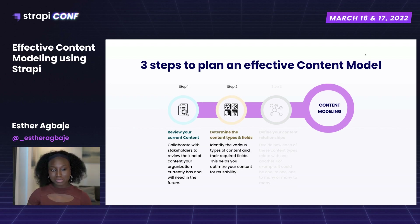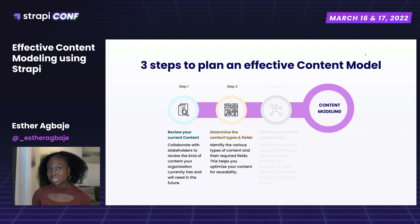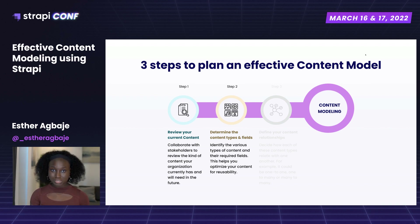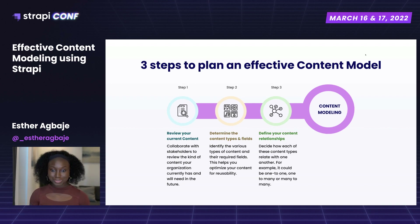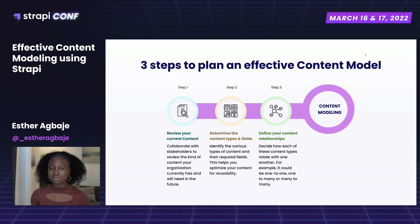The second step is to determine the content types and the fields. This will help you to optimally create content that is reusable and flexible. The final step is to define the content relationship — decide how each of these content types are related. Is it a many-to-many? Is it a many-to-one? What kind of relationships do they share?